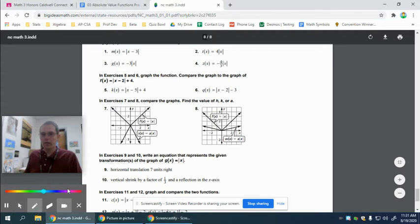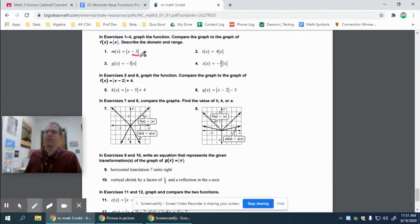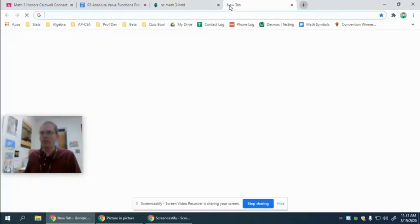Hopefully you have learned that if you have that minus three, since it's inside the absolute value, inside the grouping symbol, it's going to either move it left or right. And that inside moves backwards of what you would think. So a minus three is actually going to move to the right three. Hopefully you're beginning to figure that out. But if not, we always have Desmos.